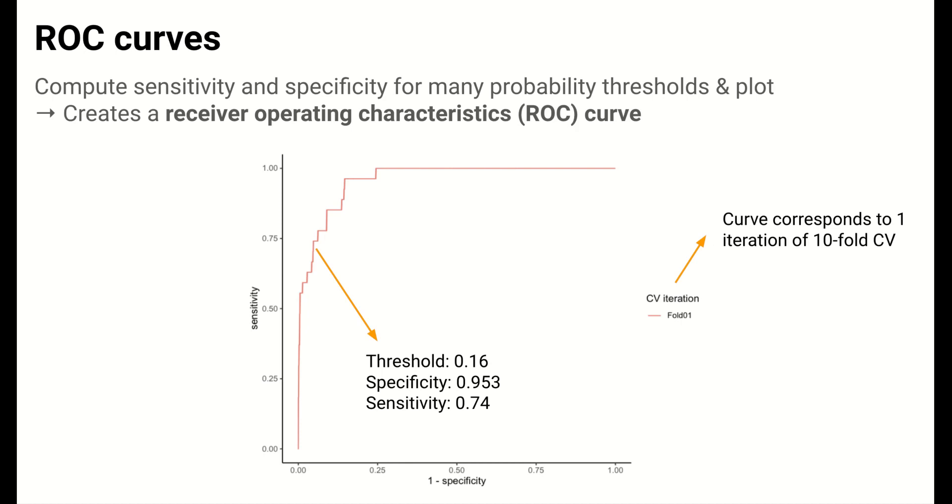So to clarify how the ROC curve arises, each point on the curve comes from one probability threshold. For example, for a probability threshold of 0.16, the test specificity is estimated to be 0.953 and sensitivity is 0.74. For a threshold of 0.0145, test specificity is estimated to be 0.76 and sensitivity is 0.963.